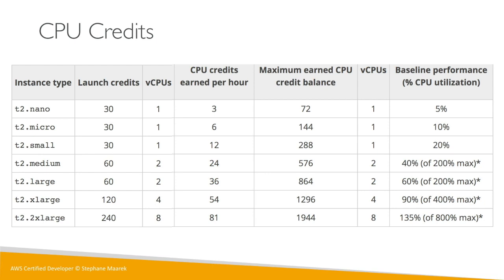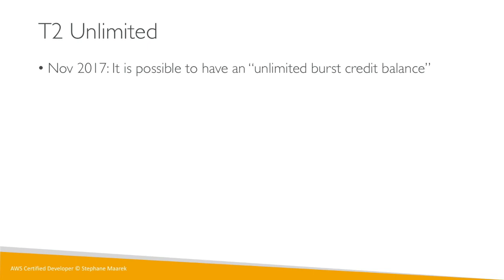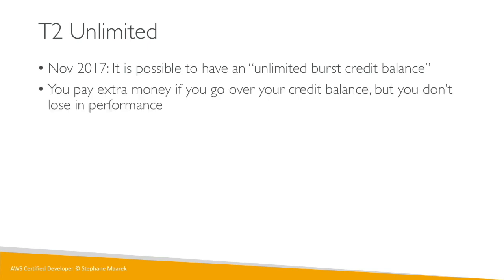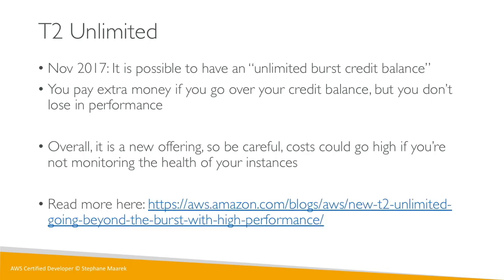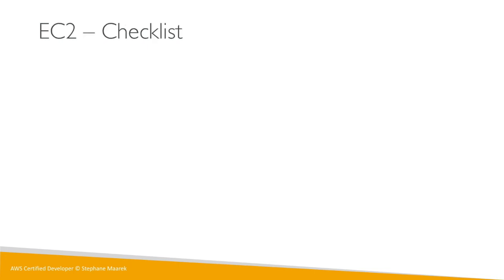There is a new concept called T2 Unlimited, which allows unlimited burst credit balance. You pay extra money if you go over your credit balance, but you don't lose performance. Be careful though — costs can go really high if you're not monitoring your instances and they consistently run at 100% CPU usage. You can read more about it on the AWS blog.